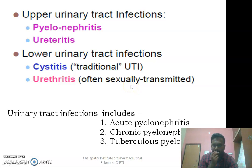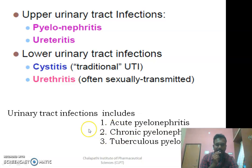Coming to urinary tract infections, and specifically pyelonephritis, we have three different forms: acute pyelonephritis, chronic pyelonephritis, and tuberculosis pyelonephritis.